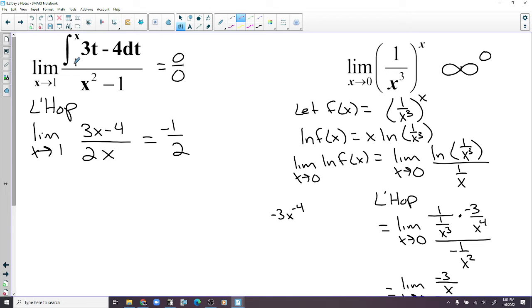If we plug 1 in, integral from 1 to 1 is 0, and 1 minus 1 is 0. So we're going to do L'Hopital's. Derivative of this is 3x minus 4, derivative here is 2x. So we get negative 1 half.